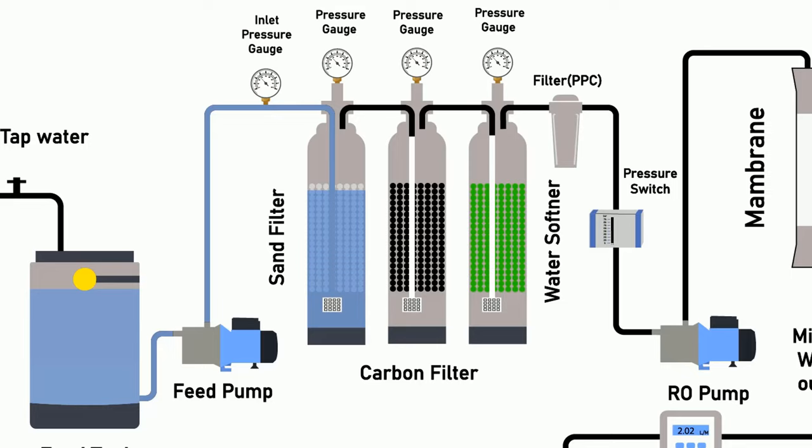In the sand filter, all the particles are separated from the tap water. The process occurs such that water enters from an opening at the bottom of the tank, travels upward, moves through the sand, and goes to the carbon filter. In this way, all particles are separated from the tap water.